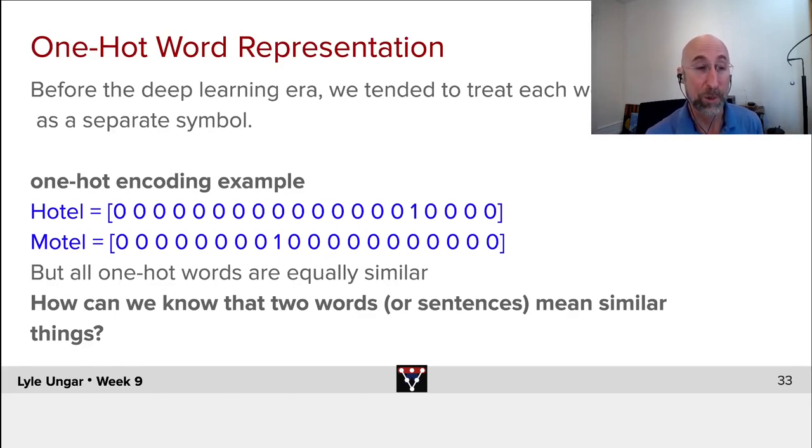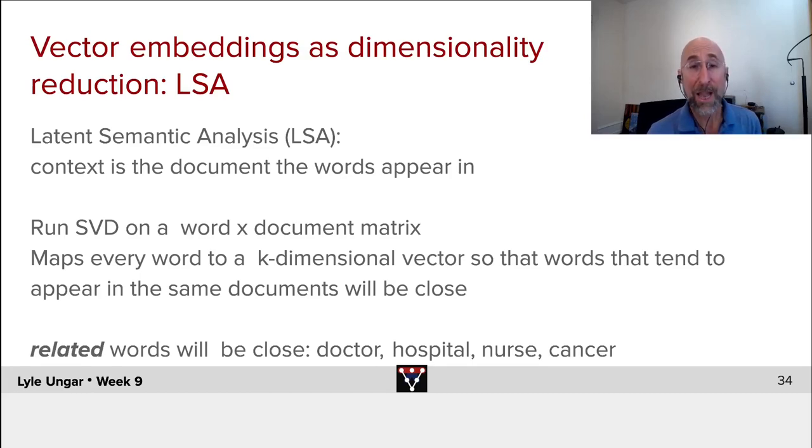We want something that's lower dimensional, not a million dimensional but say 300 dimensional or next week we'll do 768 dimensional—low dimensional compared to the words. We want to actually compute similarity so we can learn that if we recognize 'hotel,' then 'motel' would be similar.